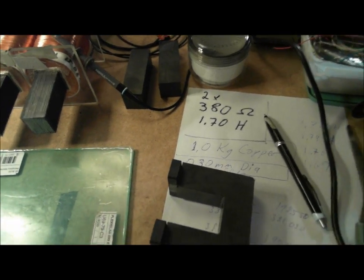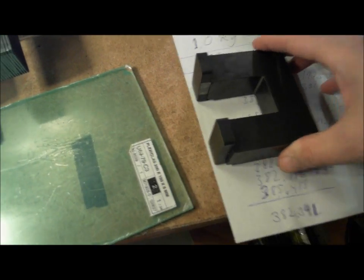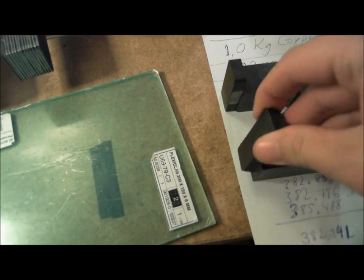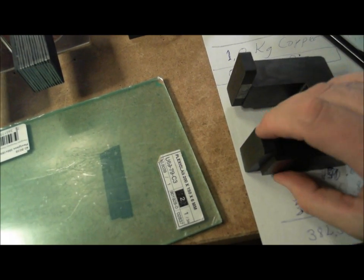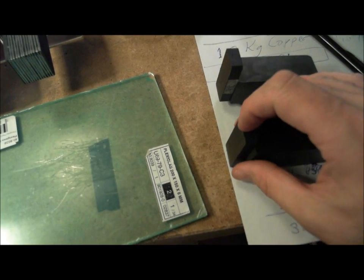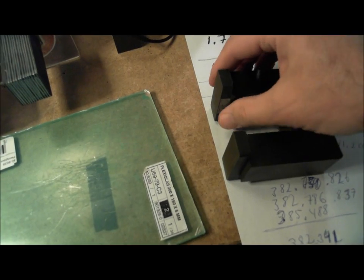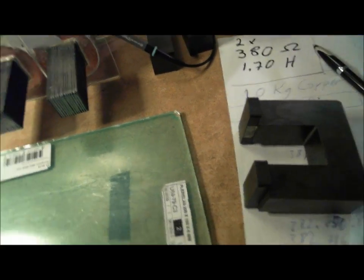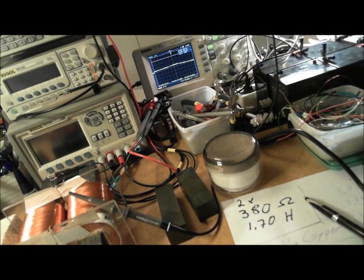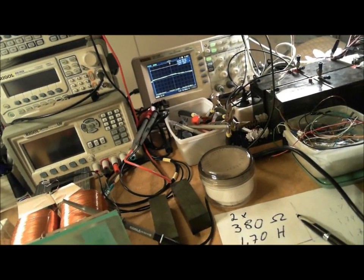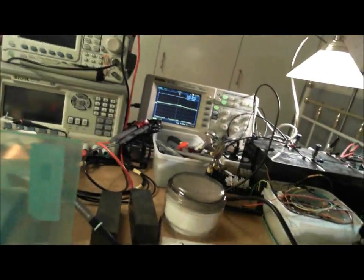I tested sliding these small and quite weak ferrite magnets across the core. And I don't know, but this is almost a bit insane, I think. I can easily get 30 or 40 volts only by sliding the magnets.